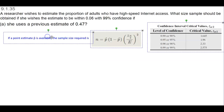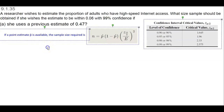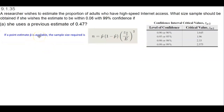If a point estimate is available, then the sample size required is the following formula: n equals the point estimate times 1 minus the point estimate, times the critical value divided by the margin of error, all squared.